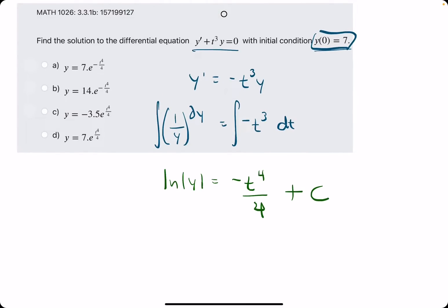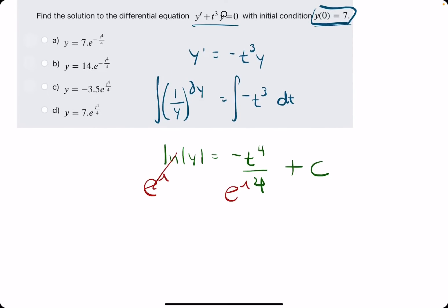And now what we can do is, let's go ahead and solve for y like we would usually. So let's take e and make it the base of both sides, giving us y equals e to the negative t to the fourth over four,